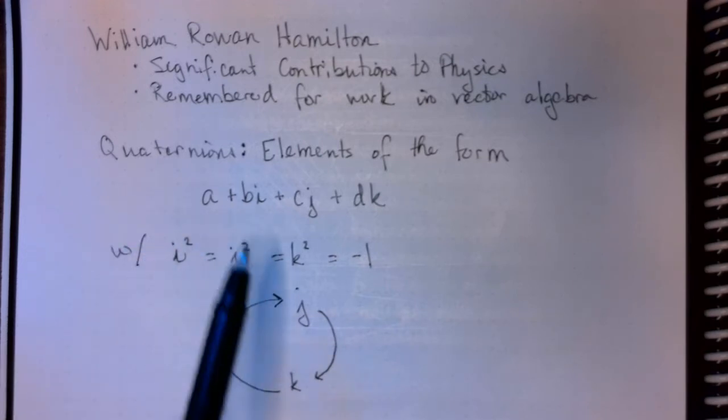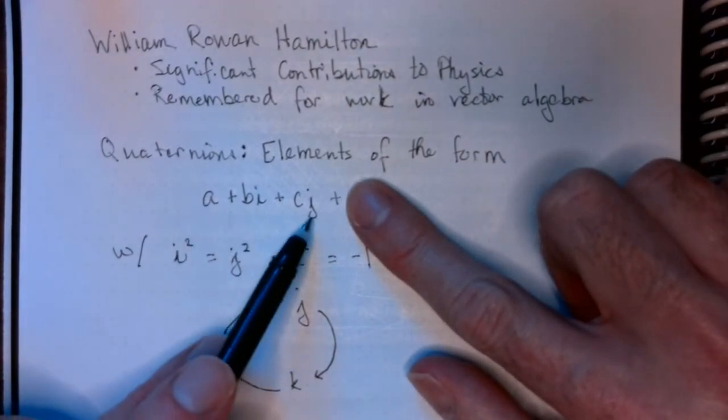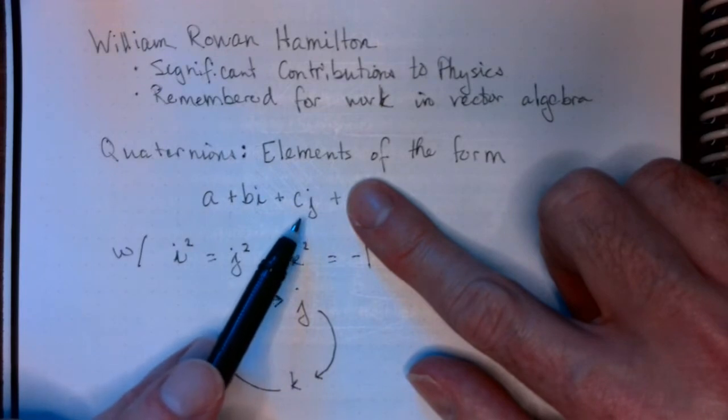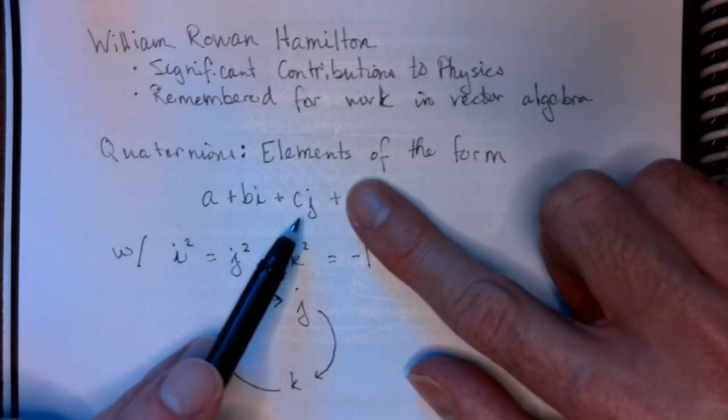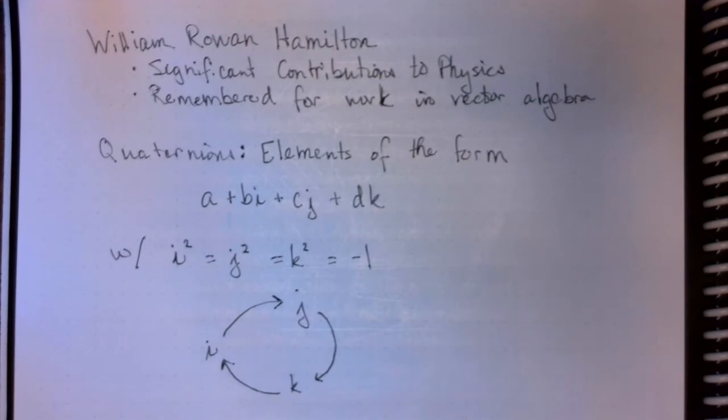And what finally clicked, what he needed—initially Hamilton tried to add this additional part to the complex number system and tried to make that work, but couldn't get it to go. And then he had the insight of adding this K part to the mix, and he was able to make a coherent system out of this. And he got the idea while he was walking to a presentation, and he carved his idea into a bridge post. So, this is one of the more famous instances of mathematical graffiti in the history of the world.